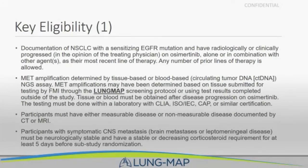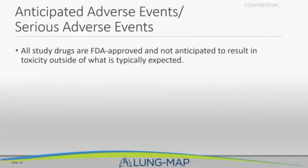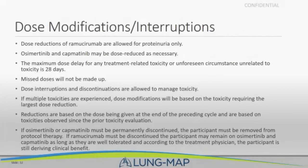Patients can have measurable or non-measurable disease, asymptomatic CNS metastases — but not symptomatic. Prior anti-VEGF/VEGFR inhibitor or prior MET inhibitor use is exclusionary. Performance status must be 0 or 1. An EKG is required with a QTCF cutoff of ≤470 ms. There's a requirement to assess proteinuria due to ramucirumab, and cardiac function is important. These are all FDA-approved drugs so we don't anticipate toxicity outside what is typically expected, although we will be watching.